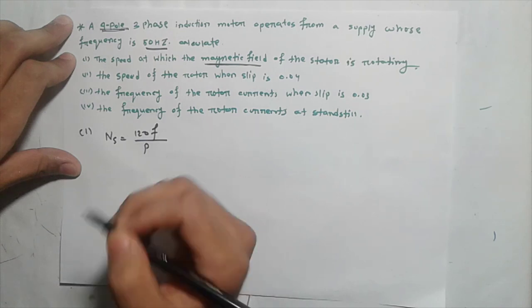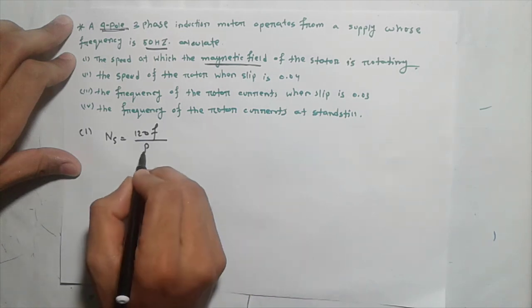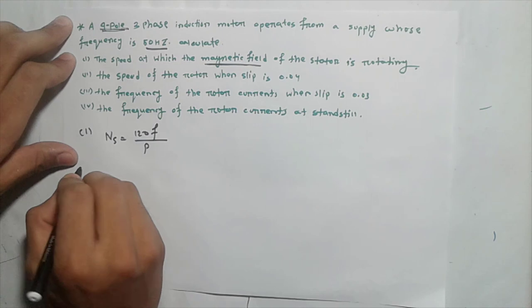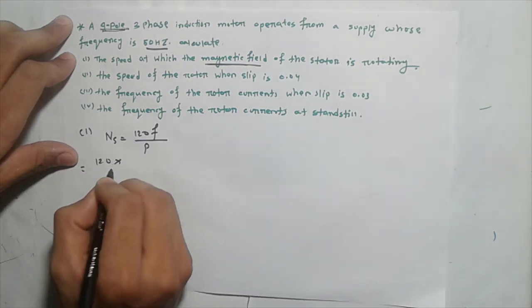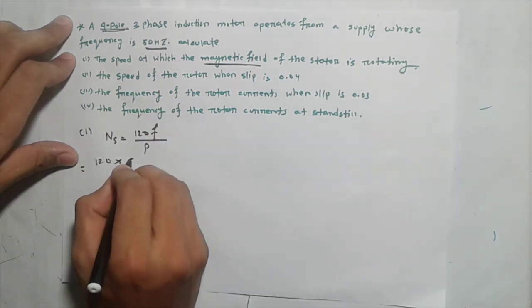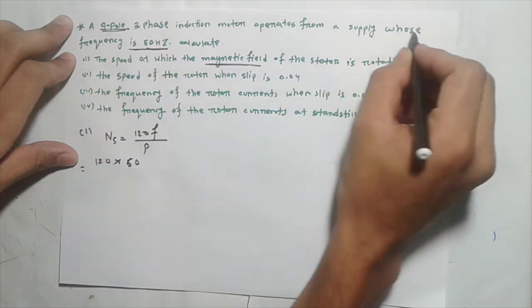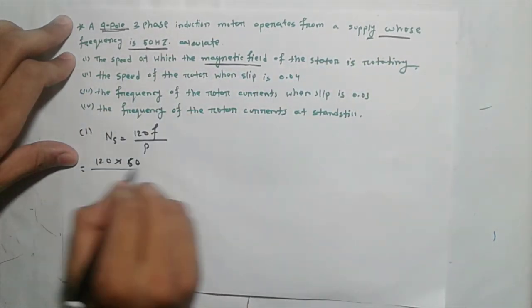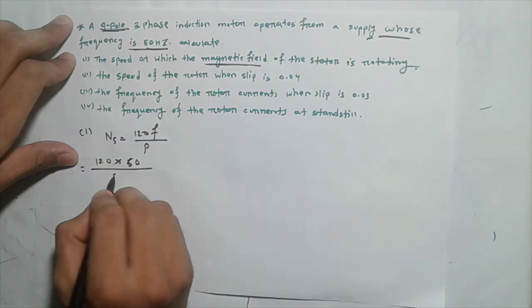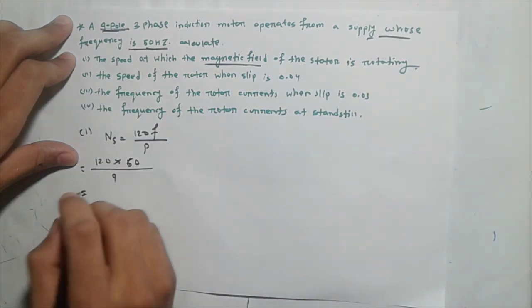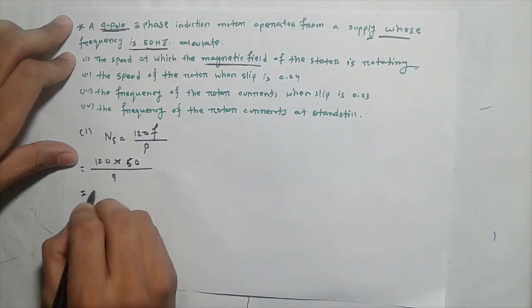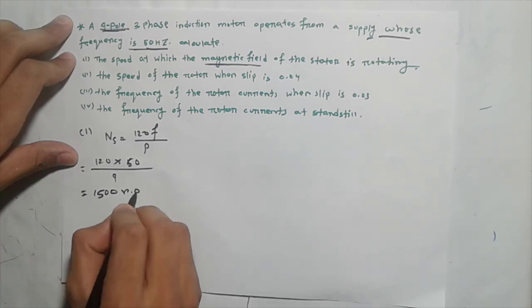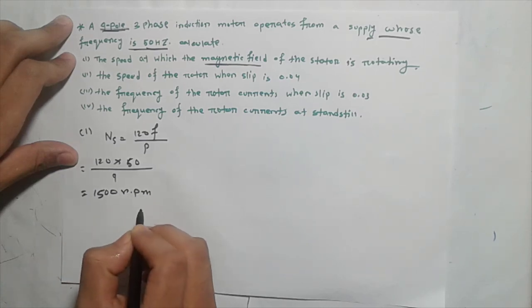The synchronous speed formula is: Ns = 120F / P, where F is the supply frequency and P is the number of poles (not pole pairs). With F = 50 Hz and P = 4 poles, we get the synchronous speed answer in RPM.